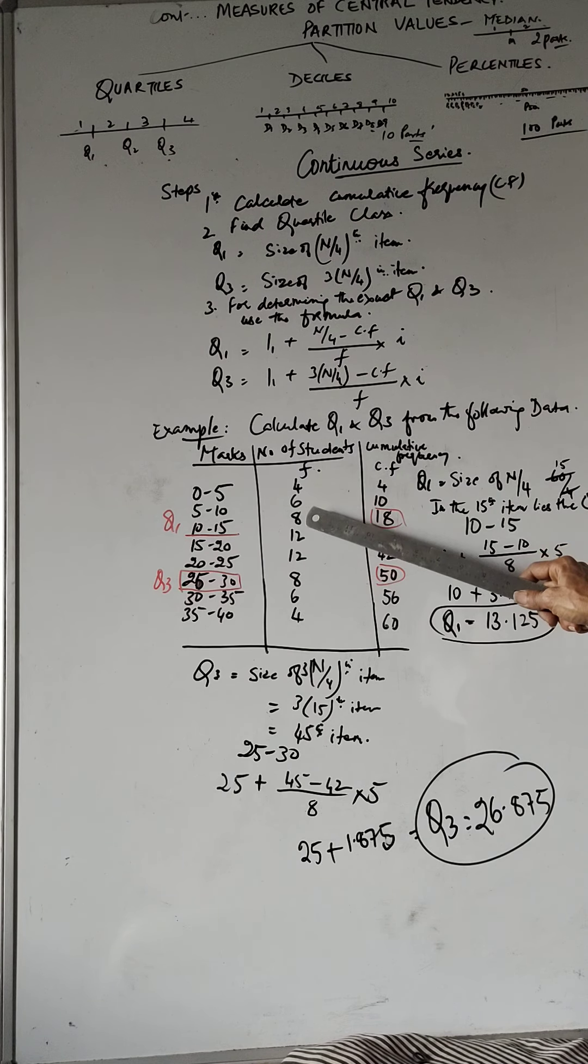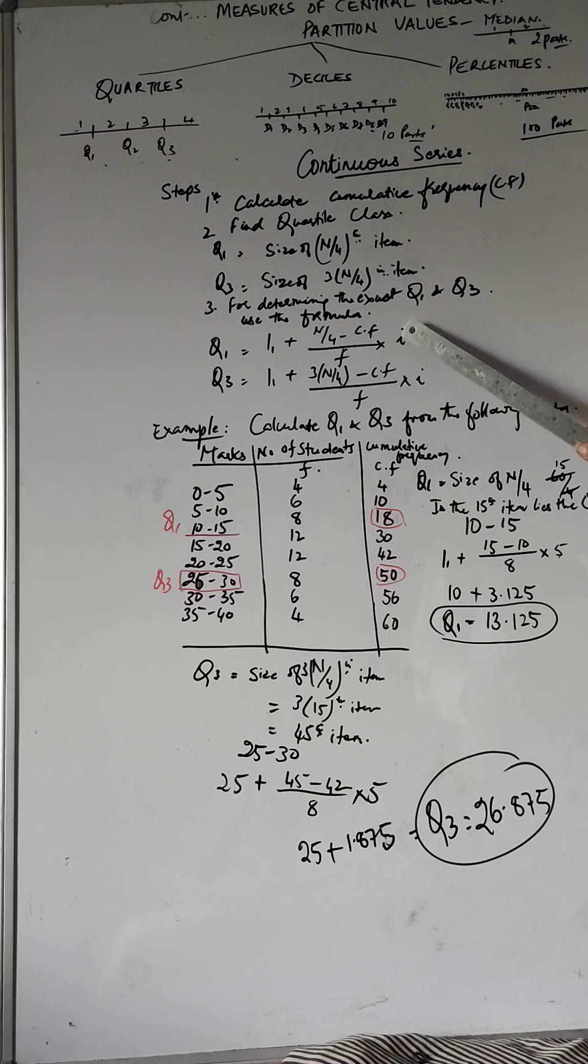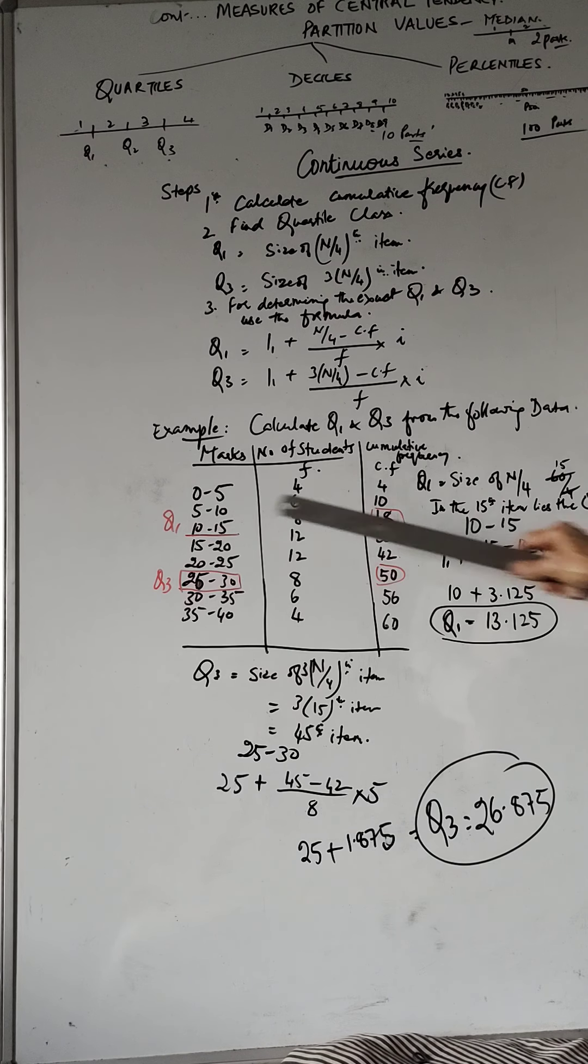And this is the frequency of the quartile class is 8. So that is how you write. And I is the class interval, which is 5.